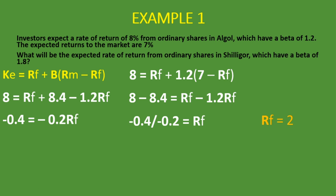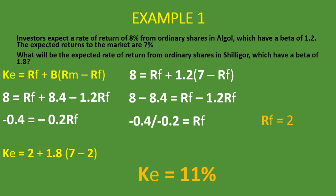Now that we know RF equals 2, let's calculate the cost of equity for Shiligo. It's: KE equals 2 plus 1.8 — the beta for Shiligo — open bracket 7, which is the return to the market, minus 2, which is the risk-free rate we just calculated. When you punch that into the calculator, it gives us 11%. So the cost of equity for Shiligo is 11%. That is how you use the CAPM formula when asked to solve for a missing figure, which is usually the risk-free rate.